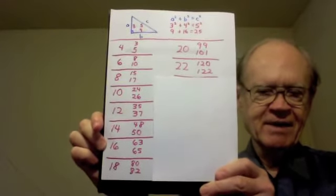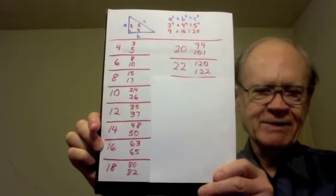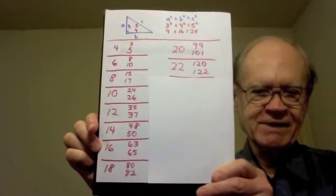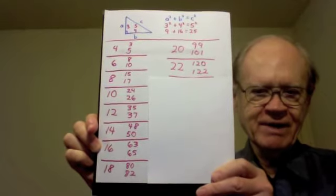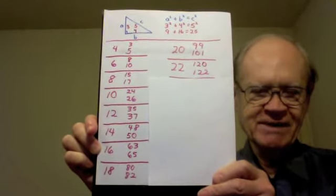16 divided by 2 is 8. 8 squared is 64. 64 minus 1 is 63. 64 plus 1 is 65.